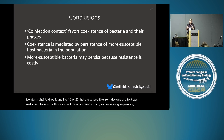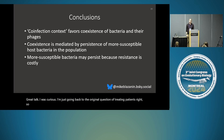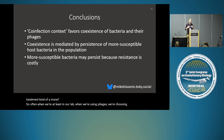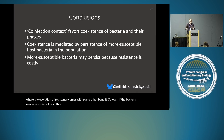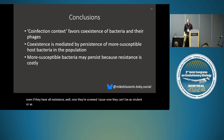We're doing some ongoing sequencing work, and the hope is that maybe from that we might be able to get at the evolutionary dynamics a bit more. Going back to the original question of treating patients — using these phages where bacteria become resistant — does that make phage treatment moot? So often when we're using phages, we're choosing phages where the evolution of resistance comes with some other benefit to us. Even if the bacteria evolve resistance, like in this case, they lose other things — the ability to move around their environment, they lose virulence, they lose pathogenicity. So even if they evolve resistance, now they can't be as virulent or pathogenic.